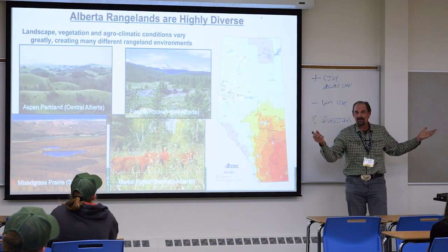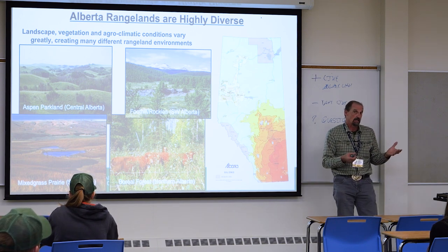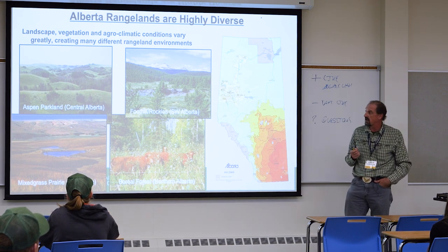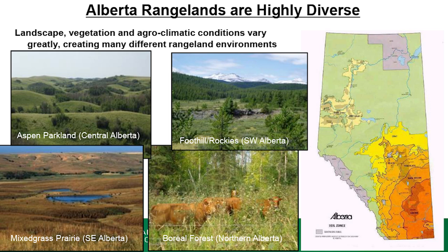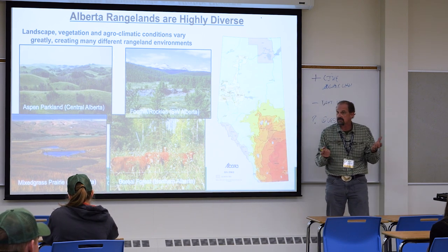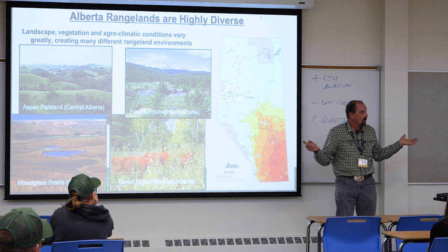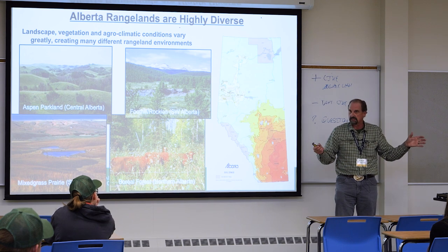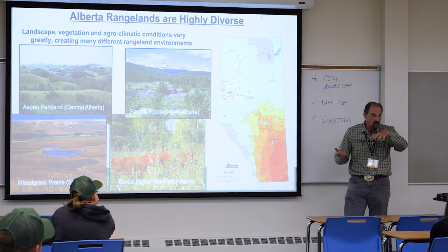The diversity of rangelands makes this a really interesting field to work in. We've got everything from the Aspen Parkland around Edmonton, through to the foothills of southwestern Alberta and the Rockies, to the boreal forest and the mixed grass prairie. There are differences in vegetation, climate, and soils — from the very dry, low-organic brown Chernozemic soils to the fertile black Chernozemic soils in the Olds area. Think pre-European settlement: all of this land was once grassland, grazed by millions of bison, elk, antelope, and deer. Where we are today was once rangeland.